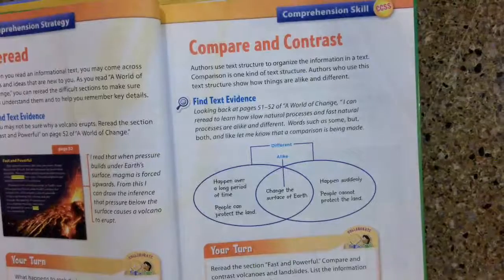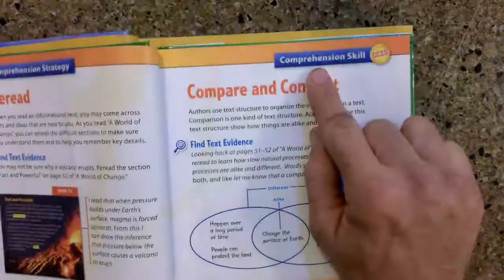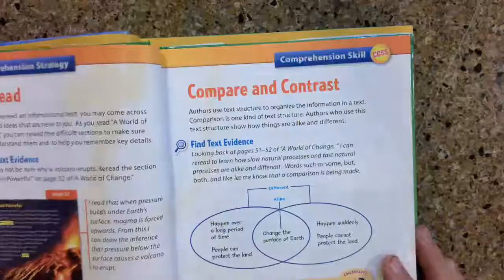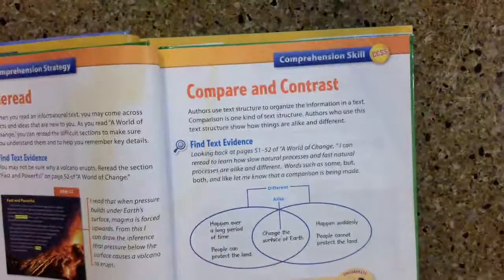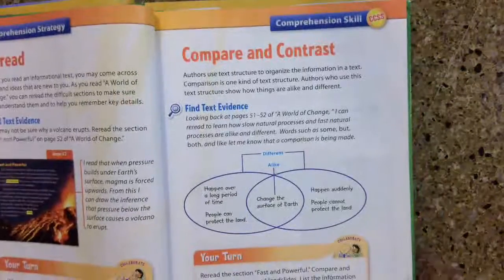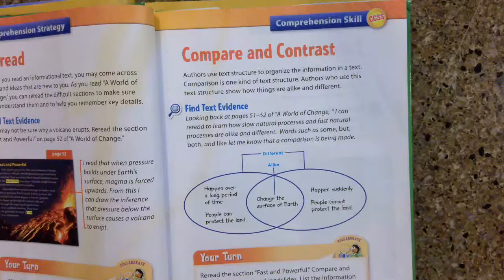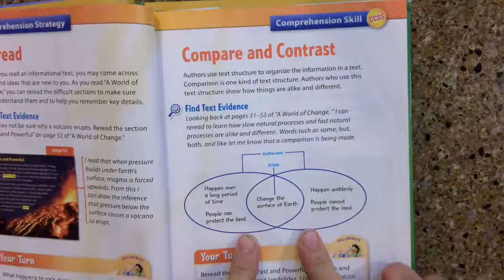It's one of our comprehension strategies in our reading book. I'm going to short read right now, page 55. One of the things we talked about the other day is we're going to want to compare and contrast. A lot of times compare and contrast are made in what's called a Venn diagram.